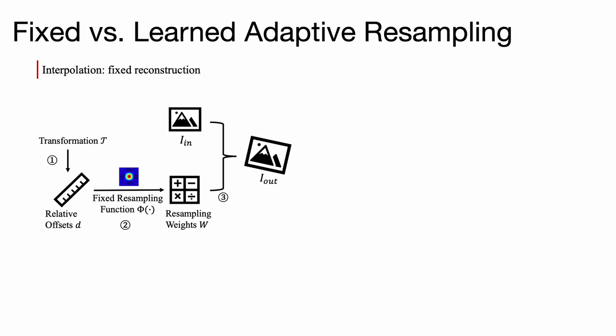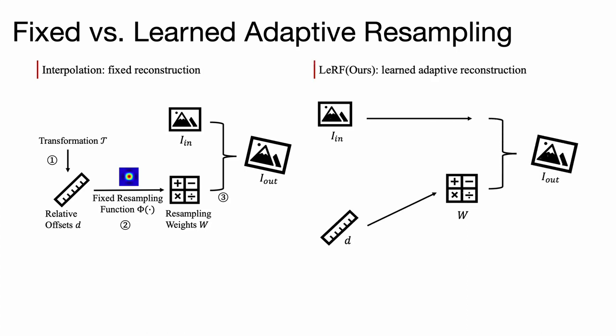Instead of applying fixed resampling function, we assign spatially varying steerable resampling functions to image pixels, where we train a deep neural network to predict the hyperparameters that determine the orientations of these resampling functions.